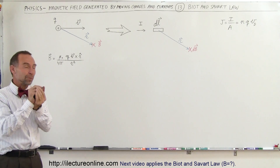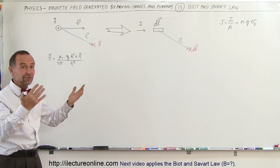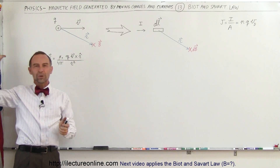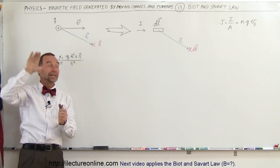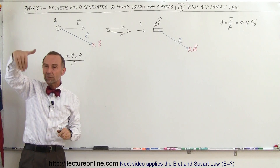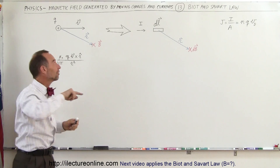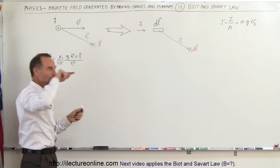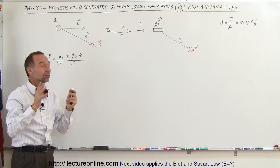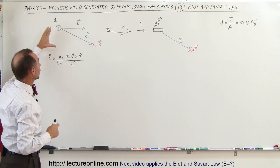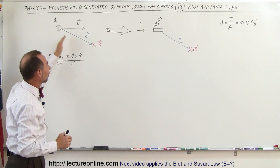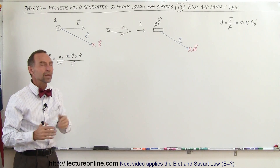A single charged particle moving through space causes magnetic fields to exist all the way around that particle. If you take your thumb and point in the direction of the motion of the particle — especially since it's a positive particle, we use the right-hand rule — then your fingers will curl in the direction of the magnetic field. Closer to the particle the magnetic field will be the strongest; farther away the magnetic field will be the weakest.